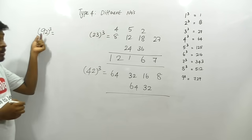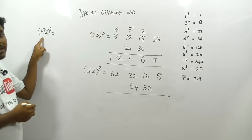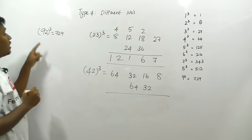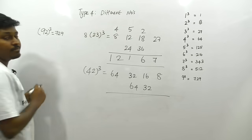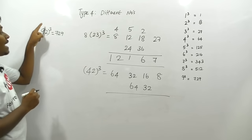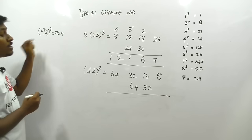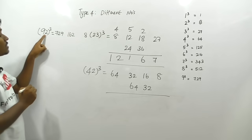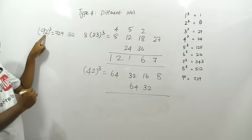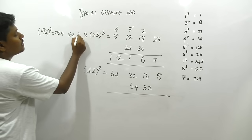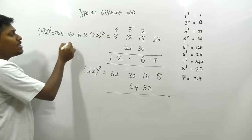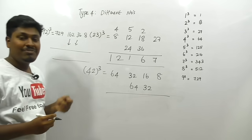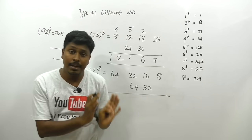For 92³ (Type 4): 9³ = 729, 2³ = 8. Square the first and multiply by second: 9² × 2 = 162. Square the second and multiply by first: 2² × 9 = 36. Double the two center numbers and add all values following the same carry procedure to get the answer for 92³.